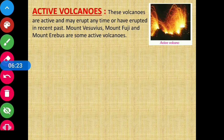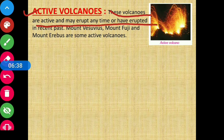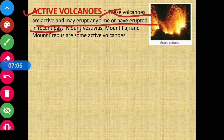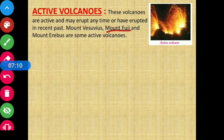There are three types of volcanoes. The first type is active volcanoes – these are volcanoes that are active and may erupt at any time, or have erupted in the recent past. Examples of active volcanoes include Mount Vesuvius, Mount Fuji, and Mount Erebus.